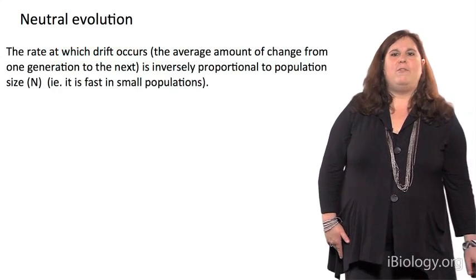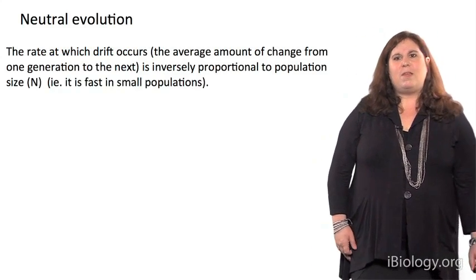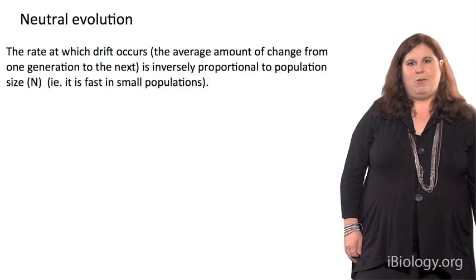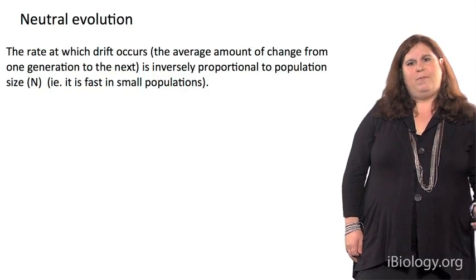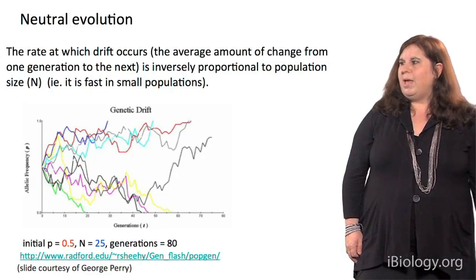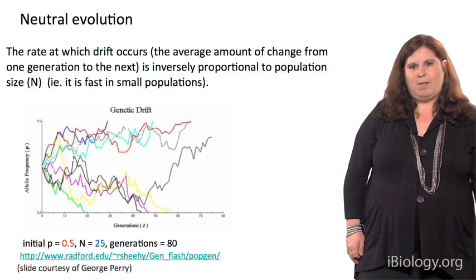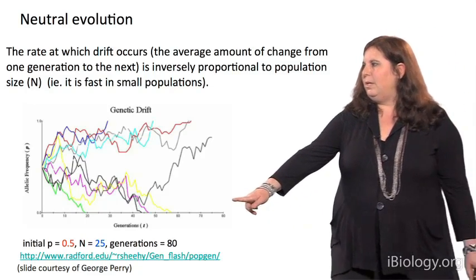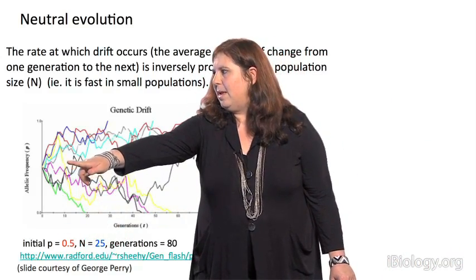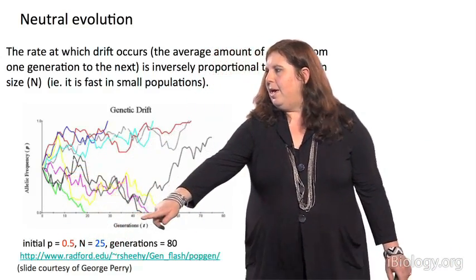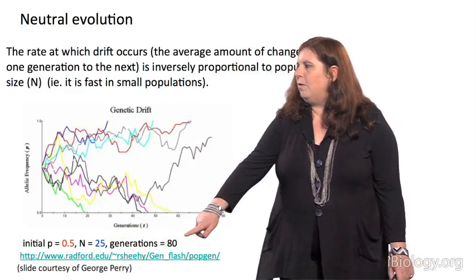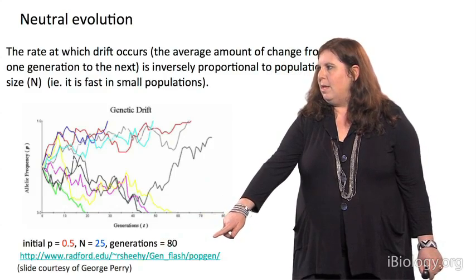The rate at which genetic drift occurs is going to be inversely proportional to the population size N. And it's going to be very fast in small populations. And here's an example that we can look at based on computer simulation. Let's assume here that we're looking at a single locus, and it has two alleles that are at 50% frequency each, as we can see here. We have a sample size of 25, and we're going to do the simulation over 80 generations.